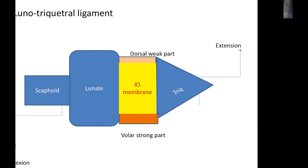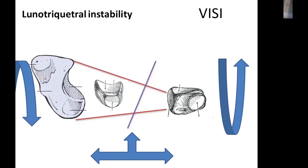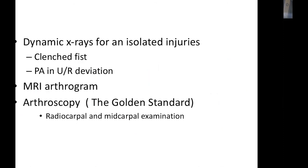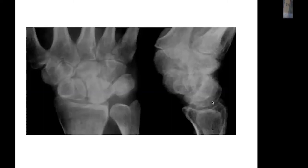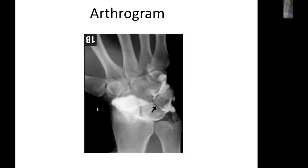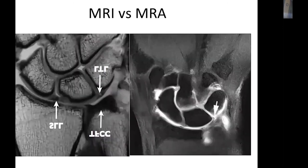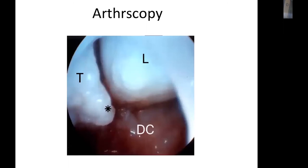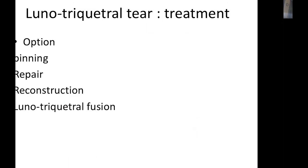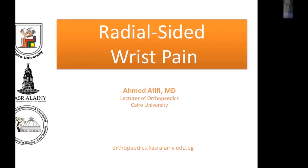Lunotriquetral injury results in the lunate losing its attachment to the triquetrum, causing it to flex volarly due to its attachment to the scaphoid. This is recognized on X-ray by VISI deformity and disruption of Gilula's lines. Arthrogram and MRI arthrogram are diagnostic, and arthroscopy may also assist in management. Treatment ranges from splinting in early cases, to repair by suture anchor, reconstruction, or lunotriquetral fusion.